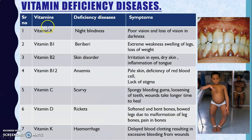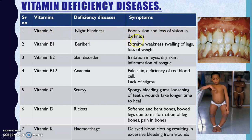Now let's look at vitamin deficiency diseases. Vitamin A is important for the eyes and is rich in carrots and green vegetables. If Vitamin A is not taken regularly, it causes night blindness — leading to poor vision and loss of vision in darkness. Vitamin B1 deficiency, caused by not eating enough cereals and grains, leads to Beriberi, characterized by extreme weakness and swelling of the legs.